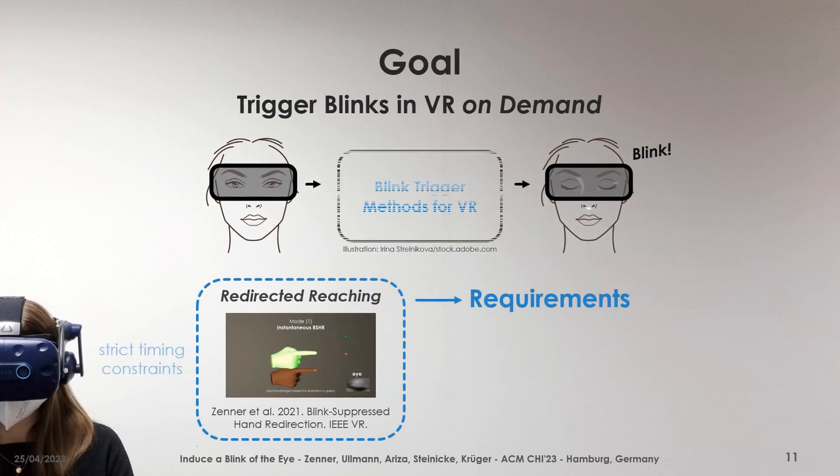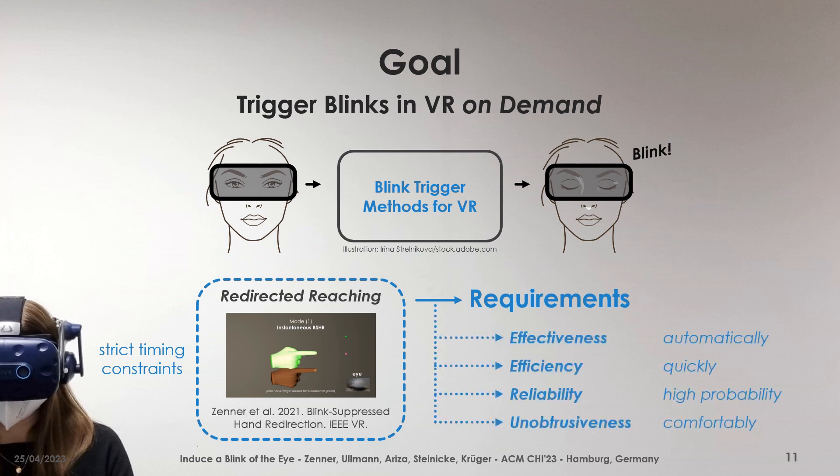To grant the VR system control over the user's blinking behavior, we propose and investigate different methods to trigger blinks on demand, which are specifically tailored to virtual reality. Inspired by the use case of blink-suppressed hand redirection, we formulate four central requirements for successful blink triggers: effectiveness, efficiency, reliability, and unobtrusiveness.